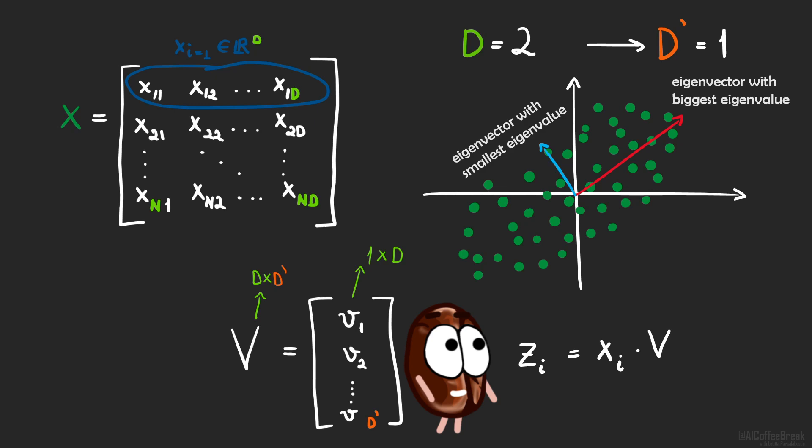Meaning that we take out each data point x and multiply it with this matrix v of eigenvectors. So we have xi, a 1 times d matrix, which is a vector, multiplied with a d times d prime matrix. What comes out is a 1 by d prime matrix, which is a vector, so vectors in our new reduced d prime dimensional space.